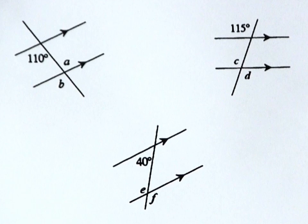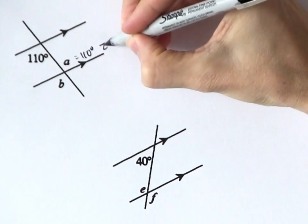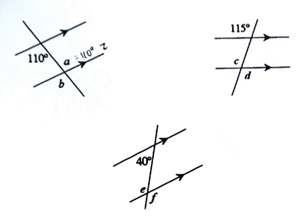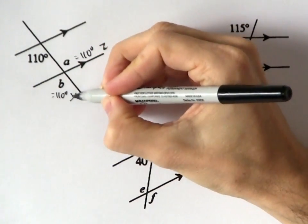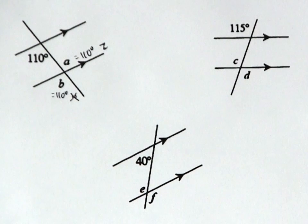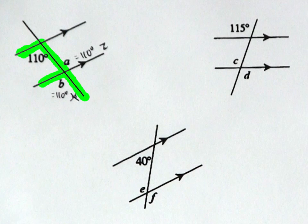Let's try a few simple problems with transversals. A must be congruent to 110 degrees, because they're alternate angles — see the Z? And B must also be 110 degrees. It's vertically opposite A, and it's also in the same corresponding position as the original angle we were given. See the backwards F?